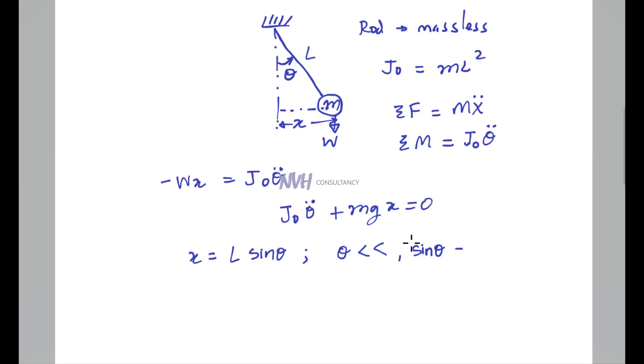What you'll end up with is J₀θ̈ plus mgLθ equals zero. And you know that J₀ equals ML² as written before.